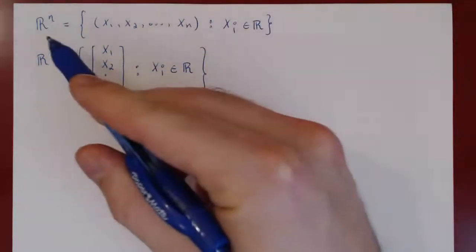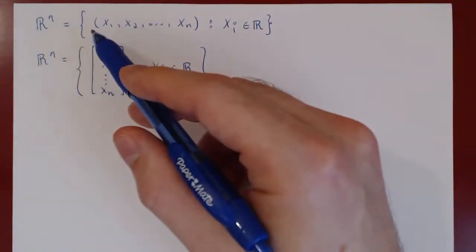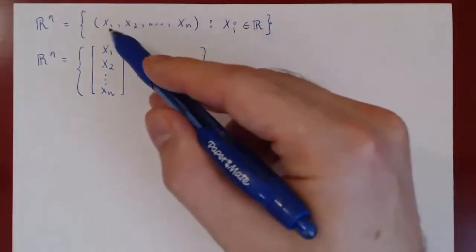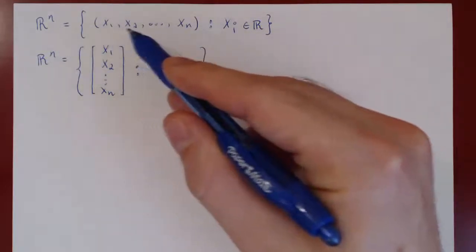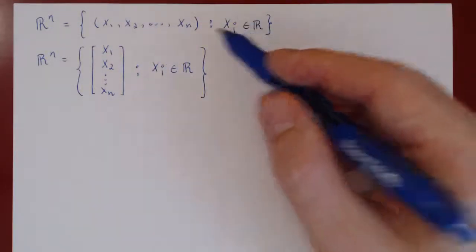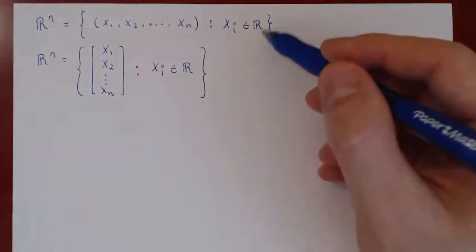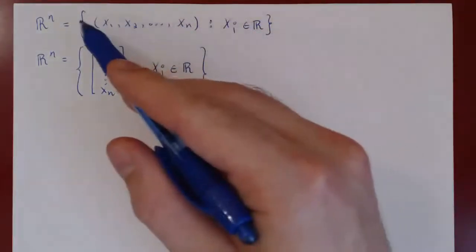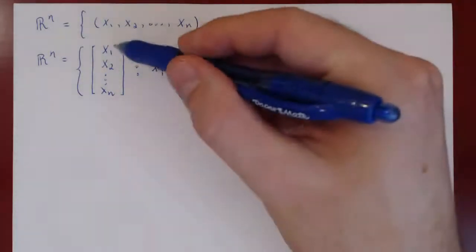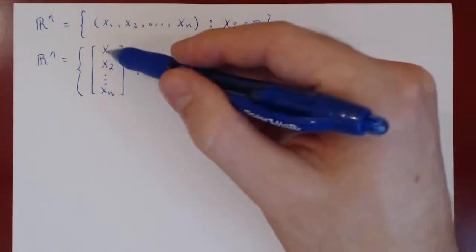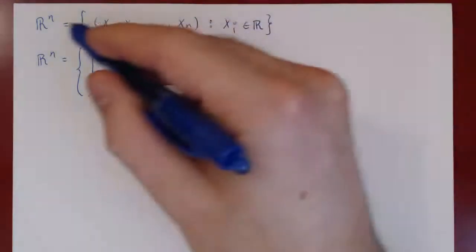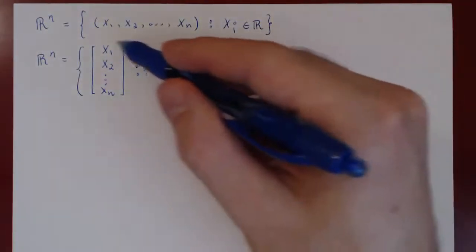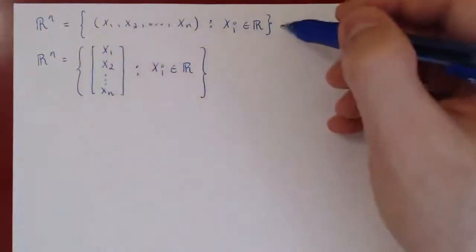Remember there are two ways to view Rⁿ algebraically. We can view Rⁿ as the set of all n-tuples of real numbers — x₁, x₂ up to xₙ — a vector with n components where each xᵢ is an arbitrary real number. But we can also view Rⁿ as the set of column matrices of length n. For now we'll stick with the n-tuple presentation, but very shortly we'll realize the column matrix presentation is better.